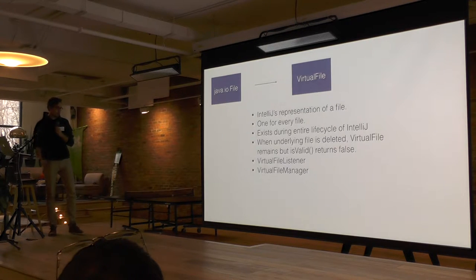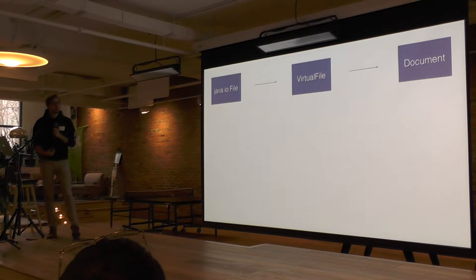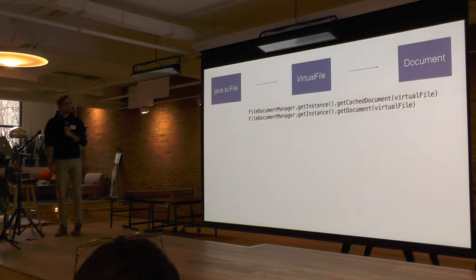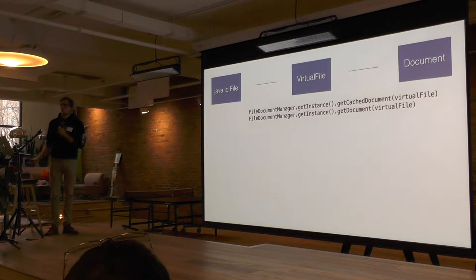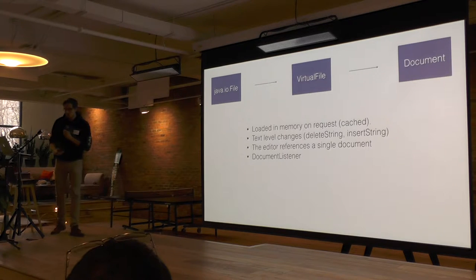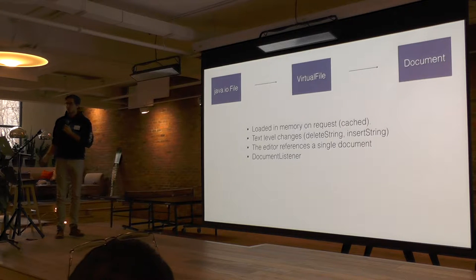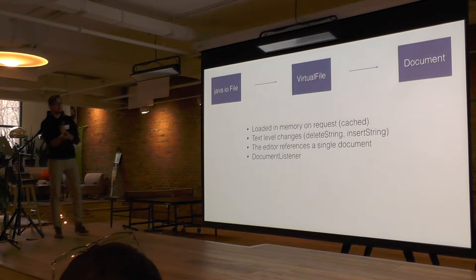There are auxiliary classes VirtualFileManager and VirtualFileListener that give you callbacks for things like refactoring and renaming. Below virtual file is document, which gives you the text-level changes. You can get a document via get cached document or get document — documents are weakly referenced by a virtual file. If you call get cached document and it's not open in IntelliJ, it returns null; get document will open it in memory and guarantee a reference. The document is the text-level changes; when you change a file name or placement, you change the virtual file. When you change file text, you change the document.